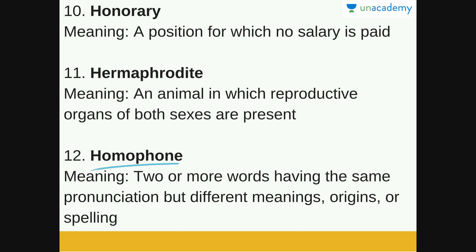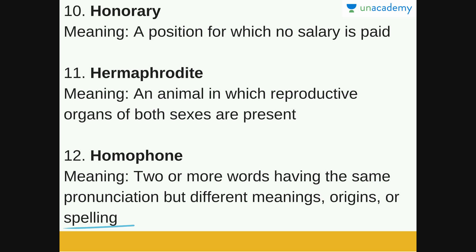The next word is 'Homophone.' A homophone refers to two or more words having the same pronunciation but different meanings, origins, or spellings. For example, 'buy' — B-U-Y, as in buying something in a shop — and 'bye' — B-Y-E, as in saying goodbye. They have the same pronunciation but different meanings and spellings. Another example is 'new' as the antonym of old, and 'knew' as the past participle of 'know.' These are all homophones.